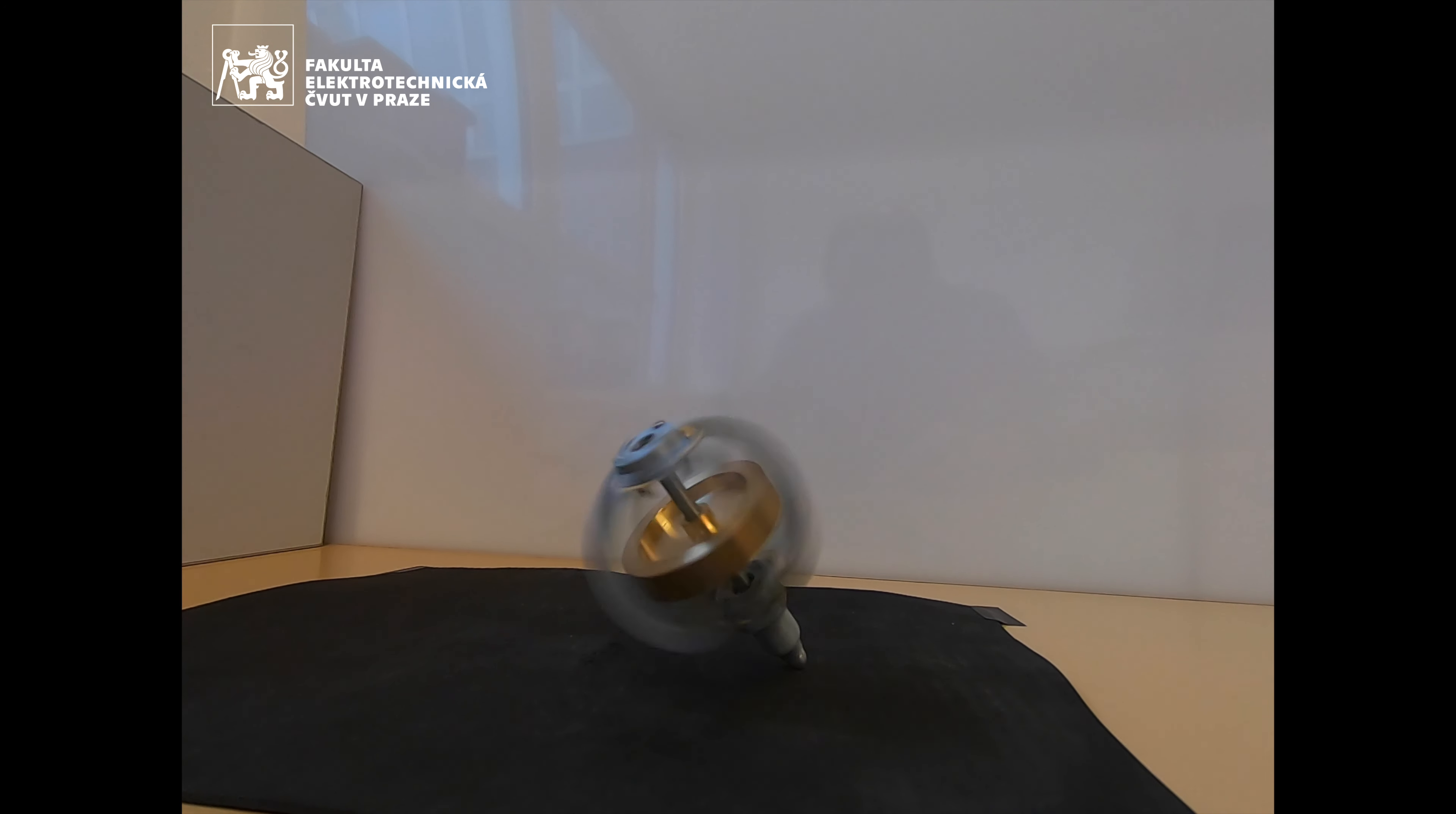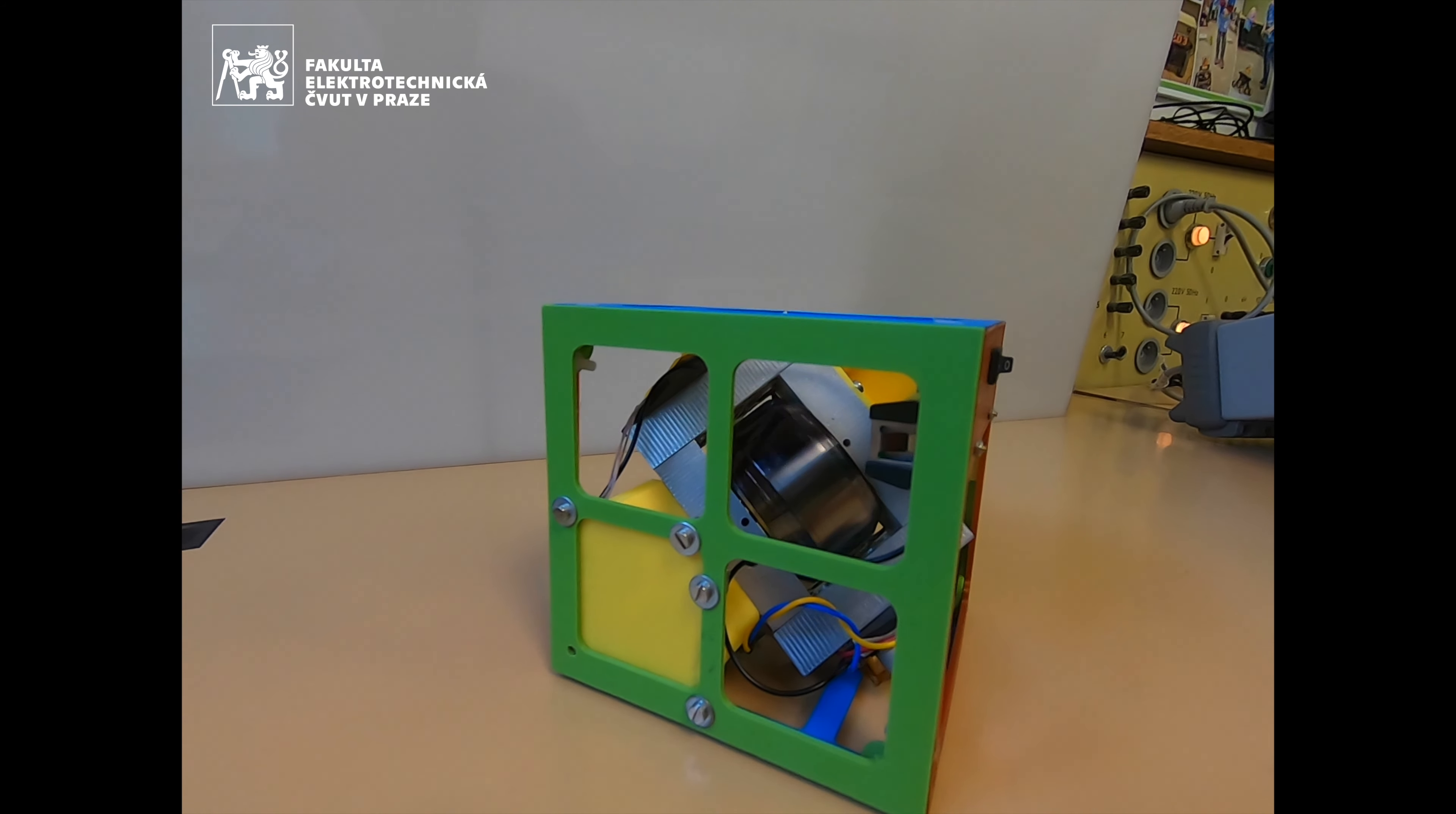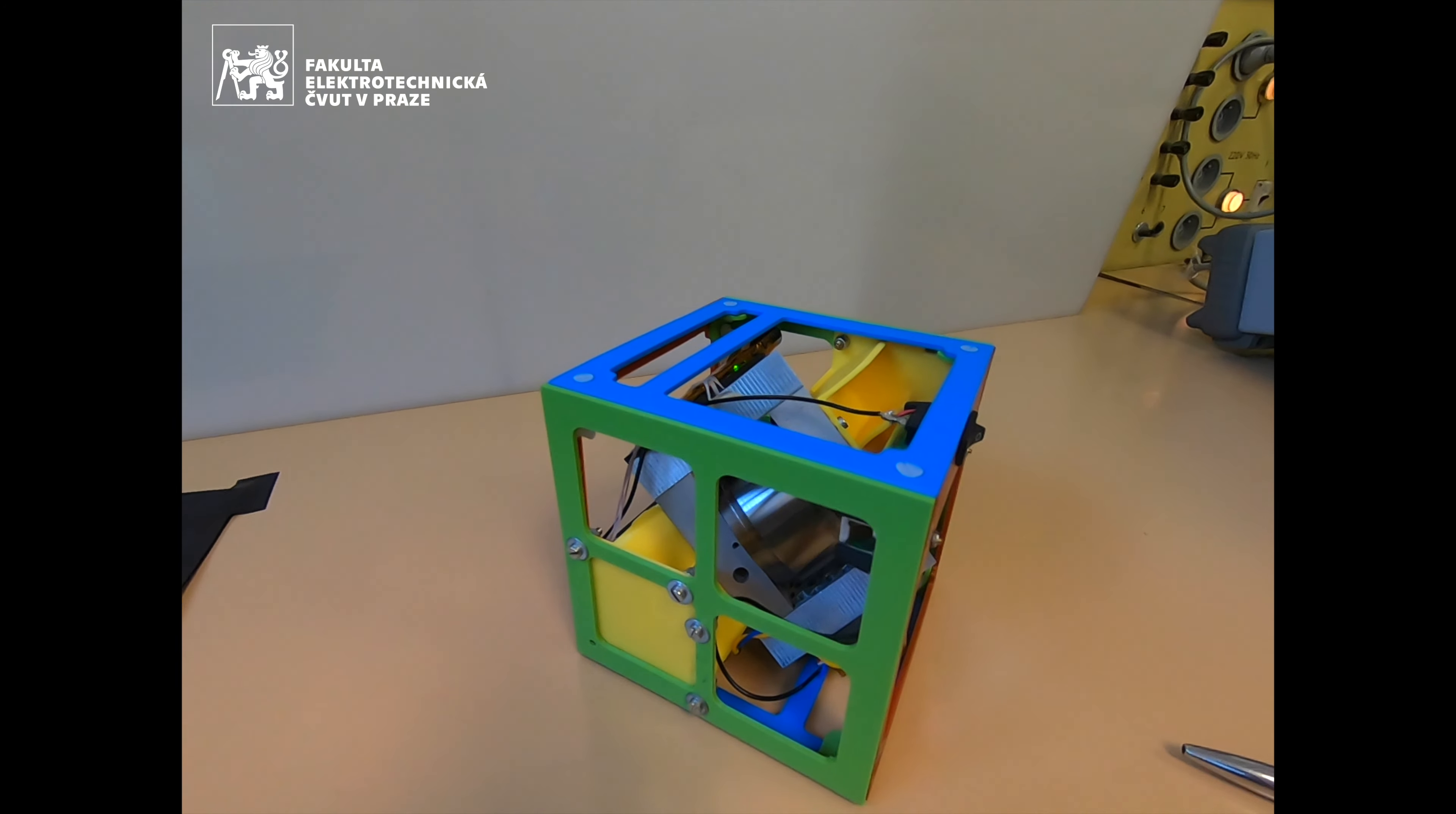You take a flywheel from an attitude indicator, formally known as a gyro horizon or artificial horizon. You can see it in action at the end of the video.